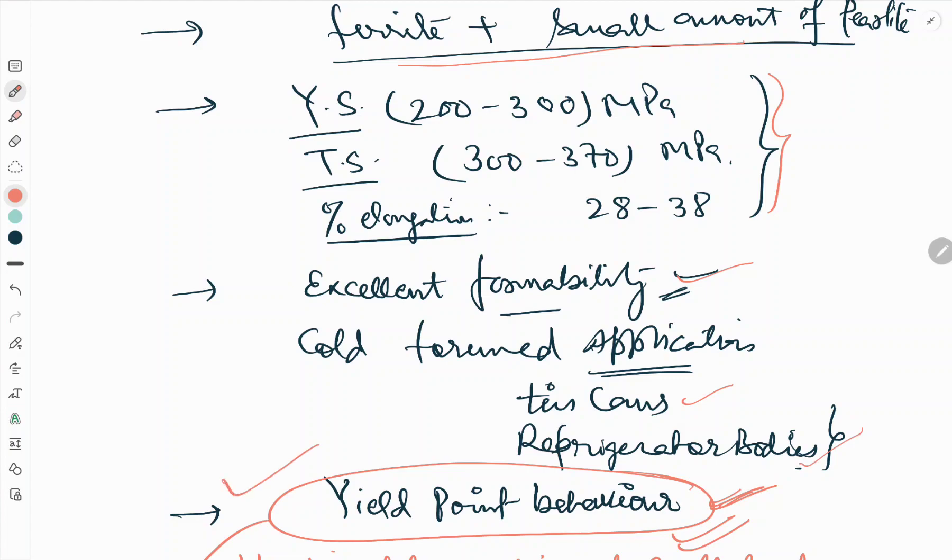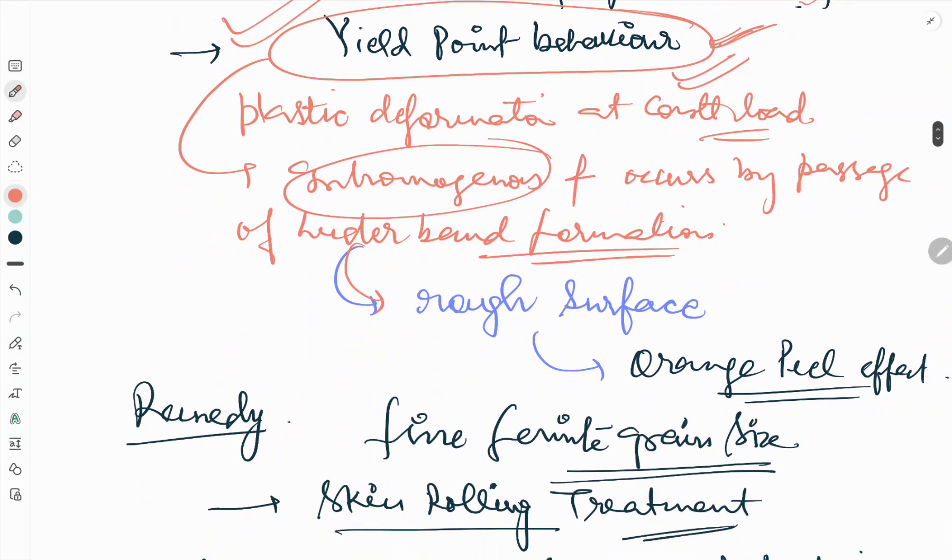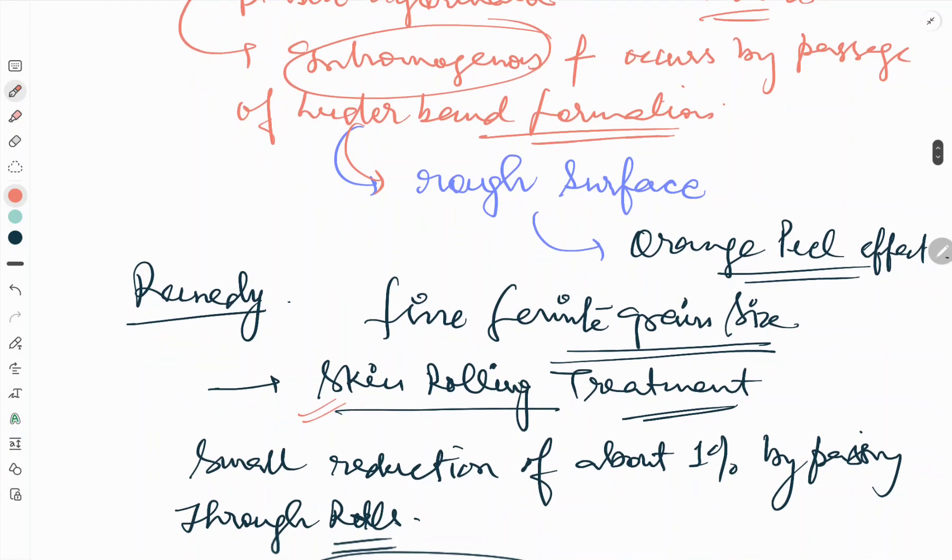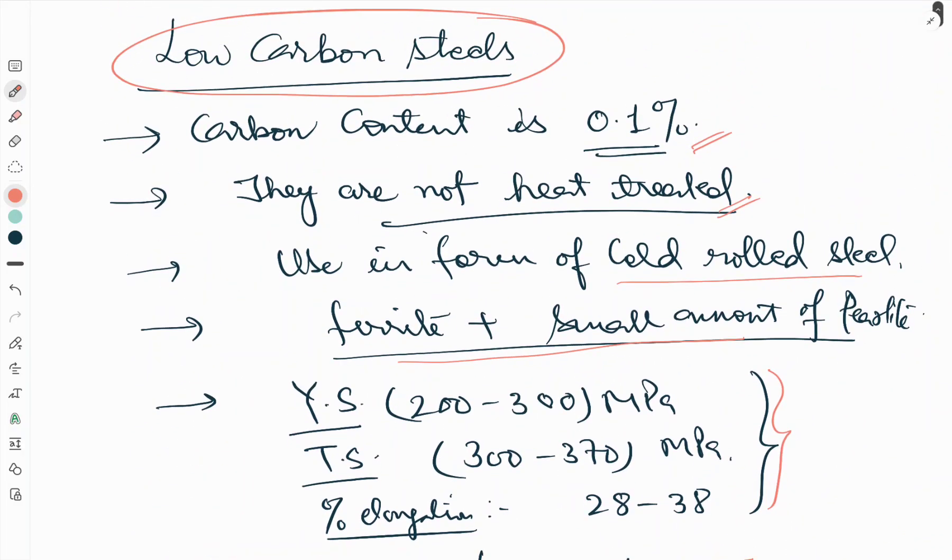It shows a special behavior that is yield point phenomena, plastic deformation at constant load which is inhomogeneous in nature and occurs by passage of Luder band formation. This Luder band formation leads to rough surface which leads to orange peel effect. To remove or reduce this effect, we can do the skin rolling treatment to get fine ferrite grain size. This is about today's video. Thank you so much. Please stay connected and like, share, subscribe our YouTube channel. Thank you.